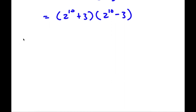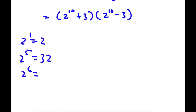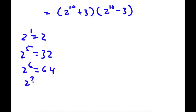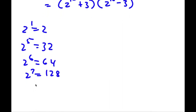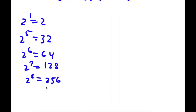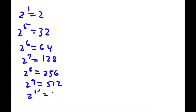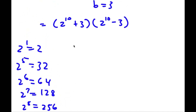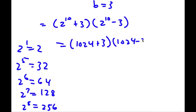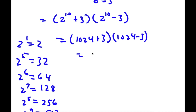Now 2 to the power of 10: starting from 2 to the 5th equals 32, doubling each step gives 2 to the 6th is 64, 2 to the 7th is 128, 2 to the 8th is 256, 2 to the 9th is 512, and 2 to the 10th is 1,024. So now I have 1,024 plus 3 times 1,024 minus 3, which is 1,027 times 1,021.